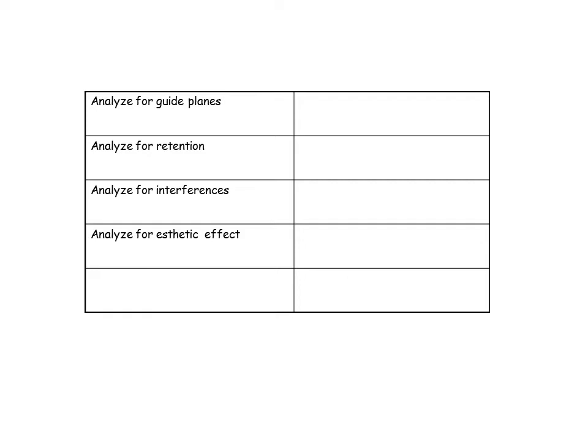Clasp retention is therefore dependent on the existence of a definite path of placement and removal. Retention at each principal abutment does not necessarily have to be balanced in relation to the tooth on the opposite side of the arch — that is, exactly equal and opposite in magnitude and relative location. 32. This is, of course, assuming that positive reciprocation to retentive elements is present, which must be cross-arch. Retention should be sufficient only to resist reasonable dislodging forces.